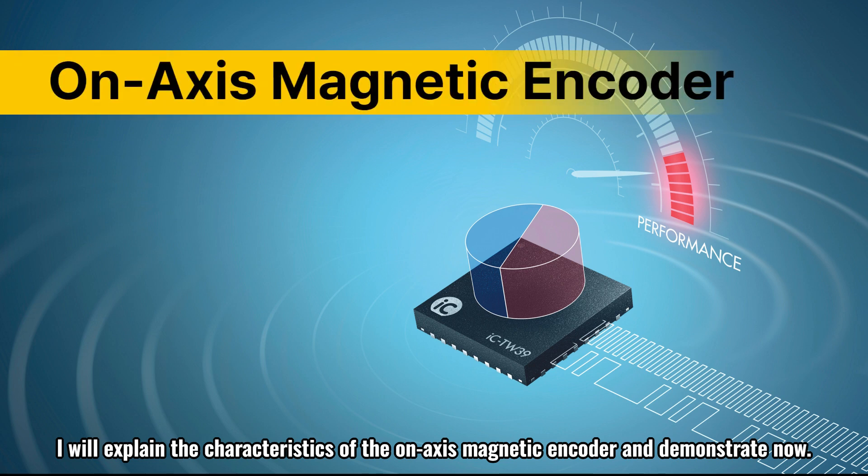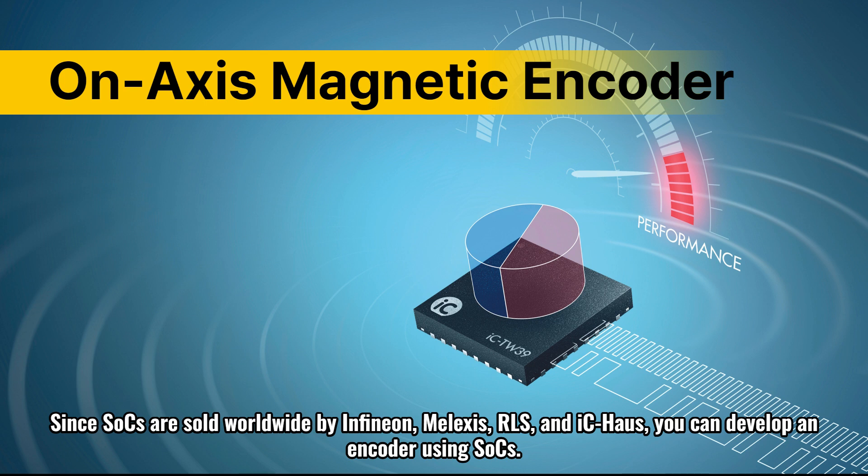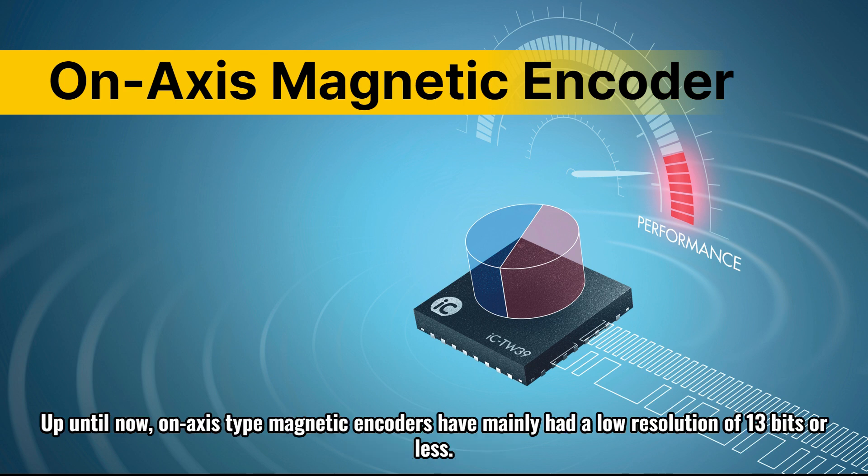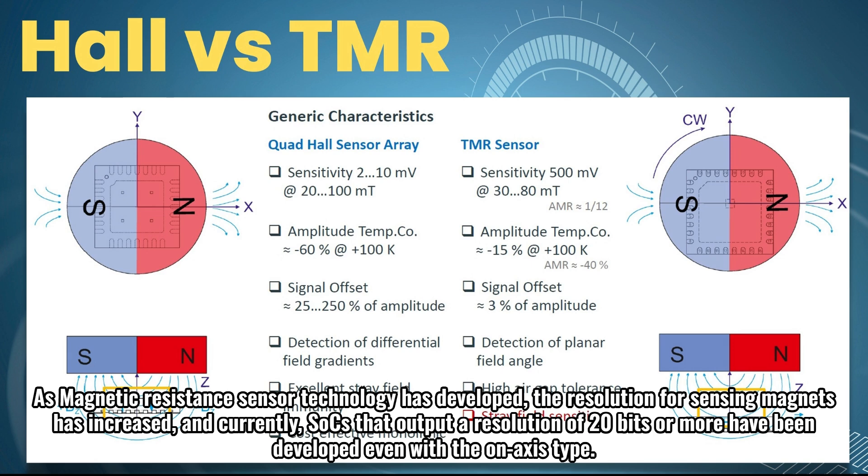I will explain the characteristics of the on-axis magnetic encoder and demonstrate now. Since SOCs are sold worldwide by Infineon, Melexis, RLS, and IC House, you can develop an encoder using SOCs. Up until now, on-axis type magnetic encoders have mainly had a low resolution of 13 bits or less. As magnetic resistance sensor technology has developed, the resolution for sensing magnets has increased.